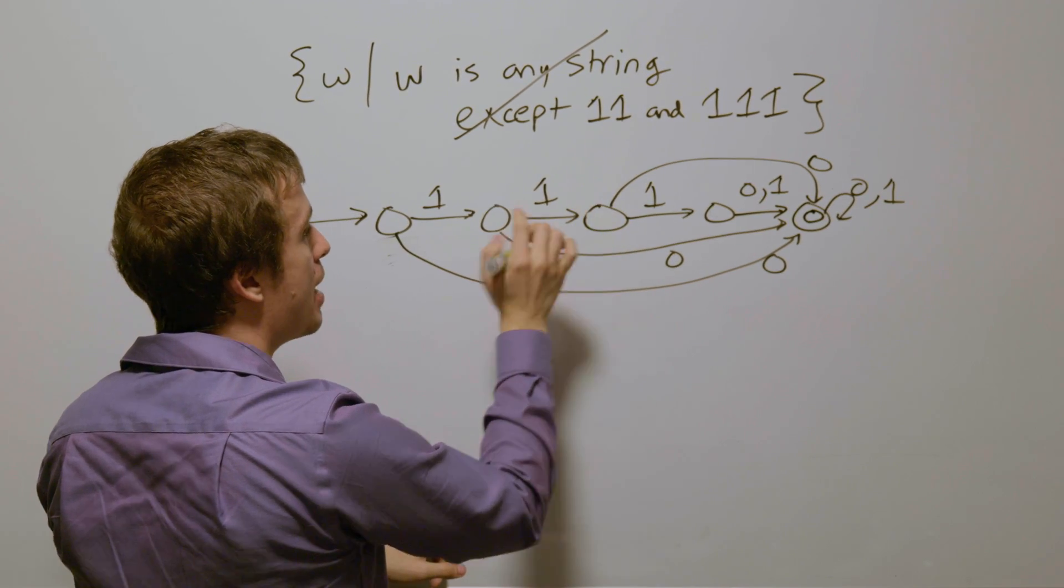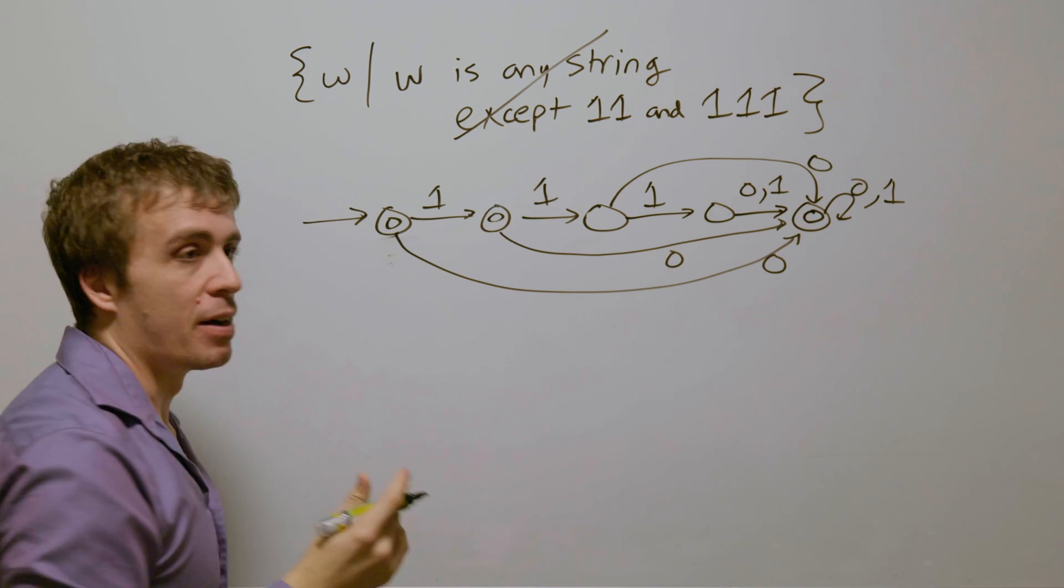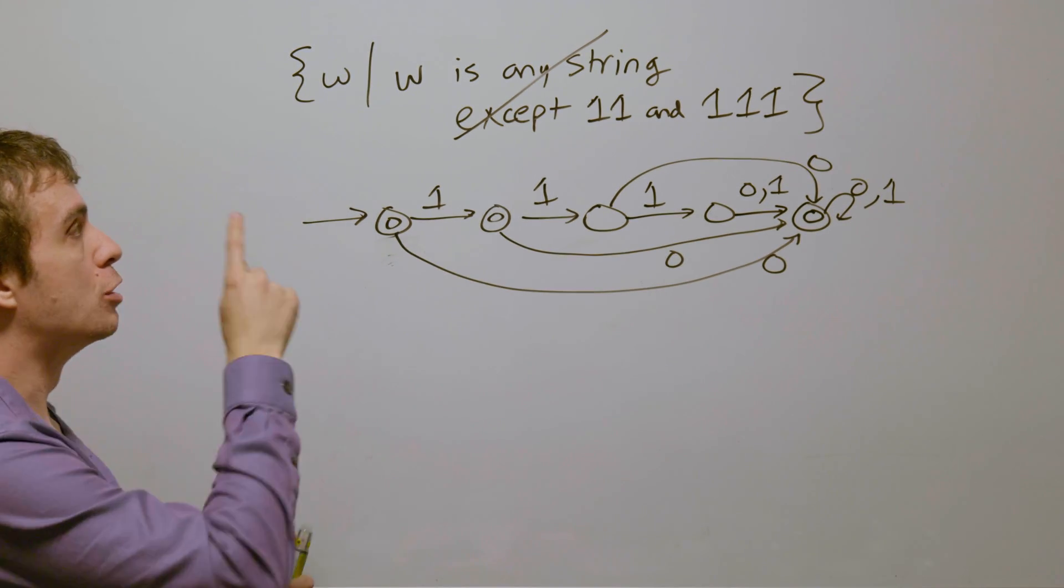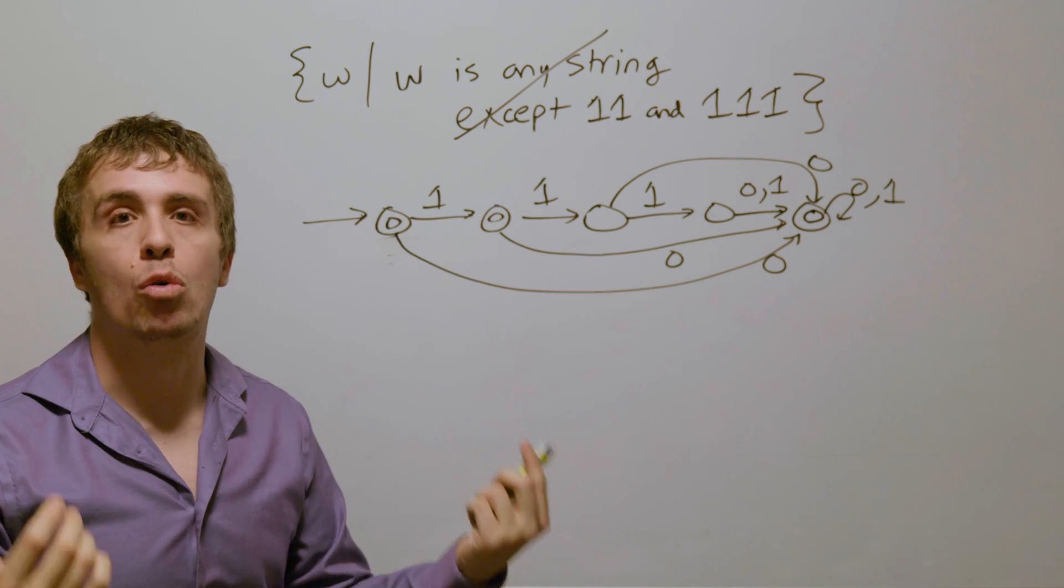This one was final, make it not. This one was not, I'm going to make it final. This one was not final, I'm going to make it final. And so therefore, this is a DFA for the language of all binary strings that are not 11 or 111.